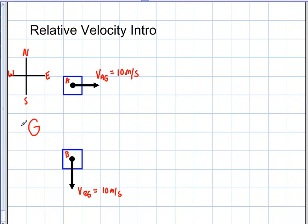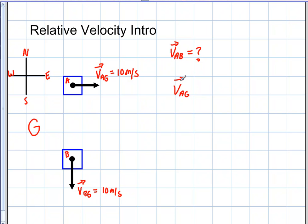So what if a problem asks: what is the relative velocity of A with respect to B — not the ground, but with respect to B? Here's the definition: to find the velocity of A with respect to B, you take the velocity of A with respect to the ground, plus the velocity of the ground with respect to B. Notice the G's line up on the inside — that's the key to remember.